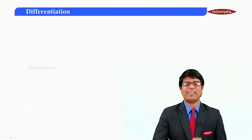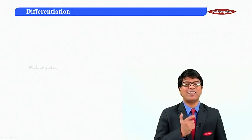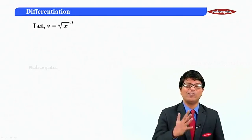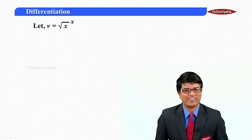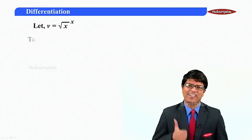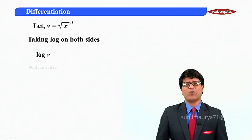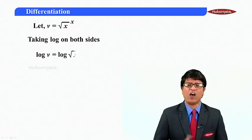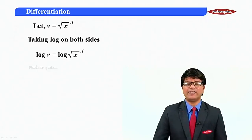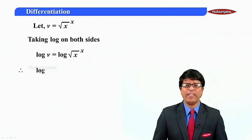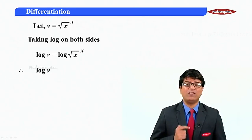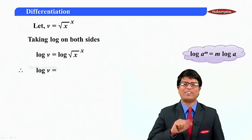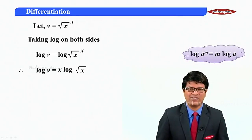Let us name the second function as v. Let v be equal to root x raised to x. Take log on both sides. Log v is equal to log of root x raised to x, which gives log v equal to x log of root x, because the power becomes the coefficient.